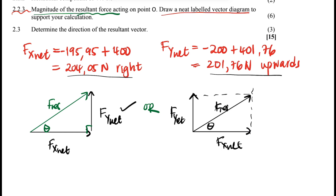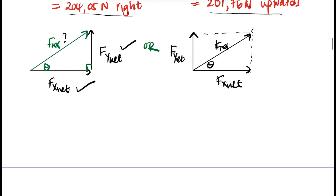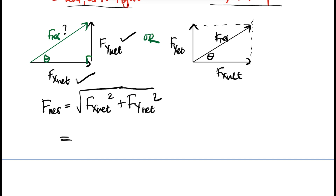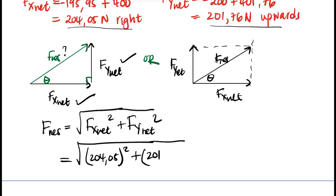Now we want the magnitude of the resultant. We use the theorem of Pythagoras: F_res = √(FX net² + FY net²). Substituting: √(204.05² + 201.76²). When you punch that into the calculator, the answer is 286.96 N.